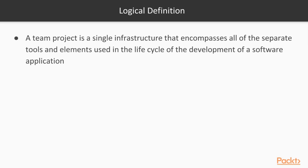Think of a team project as a container that holds a collection of artifacts used on your project. This container defines the source control you'll use — whether Git or TFVC — the work items, whether Scrum, Agile, or CMMI, and the documents and reports available. All of these are dictated by the team project and drawn up with the XML process template file.